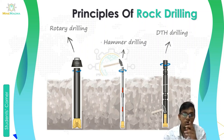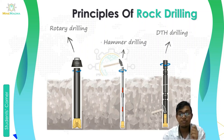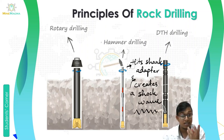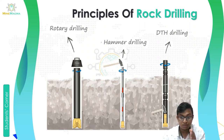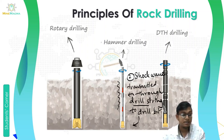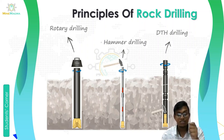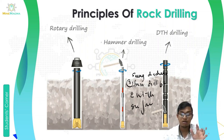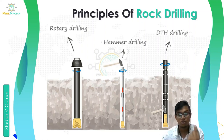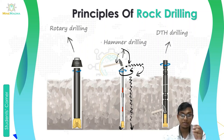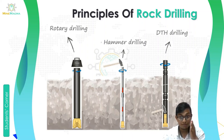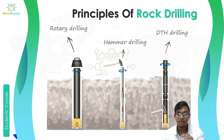Now let's look at hammer drilling. As you can see in the diagram, a hammer or piston hits the shank adapter at the top, creating a shock wave. That shock wave travels through the drill string to the drill bit, and the energy is discharged from the drill bit to hit the surface of the rock. The hammer also provides rotation. So the piston hits the shank adapter, creates a shock wave, which travels down the drill rod and is discharged at the drill bit.